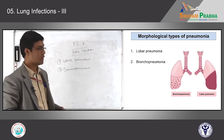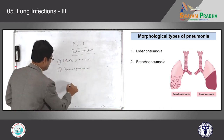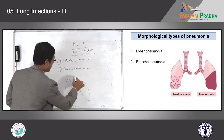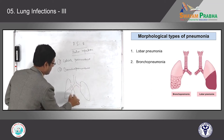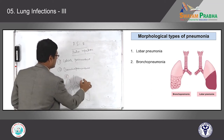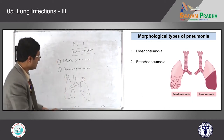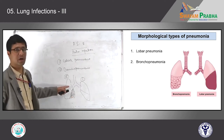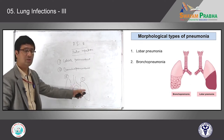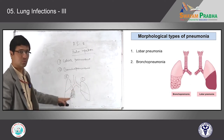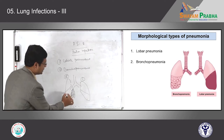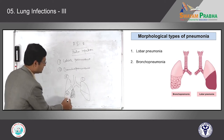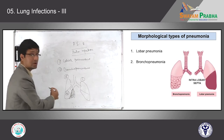As you can see in the pictures, lobar pneumonia means any one lobe is completely involved — either upper lobe, middle lobe, or lower lobe on the right side, or any lobe on the left side. Any one lobe is completely involved but the adjacent lobe is perfectly fine, with no involvement. The infection or inflammation is limited by interlobar septa.